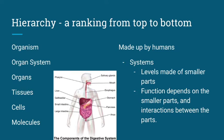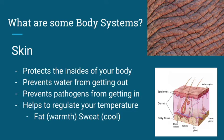One of our assignments in class over the next couple of weeks will be for you to be given some function. You need to be able to describe how that job is performed by interacting parts working together — such as how does your body digest food? You will need to be able to describe how the small intestines, the stomach, and the liver all interact together in order to digest your food. So before we get to that, we should learn about what some of those body systems are.